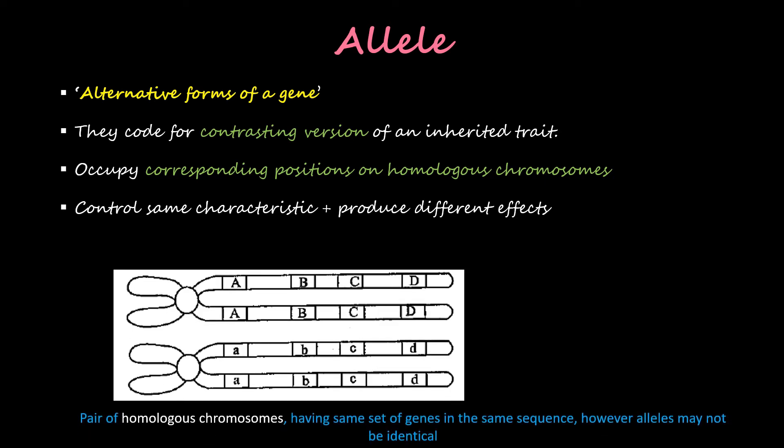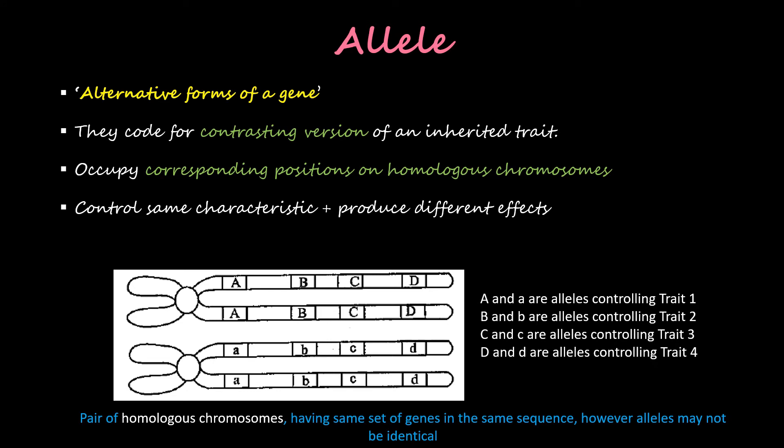Given a pair of homologous chromosomes having the same set of genes in the same sequence, alleles may not be identical. For example, capital A and small a are alleles controlling trait one; capital B and small b control trait two; capital C and small c control trait three; and capital D and small d control trait four. Whichever allele is dominant will express itself and produce a particular effect in that organism.